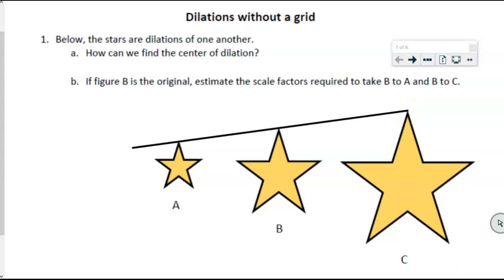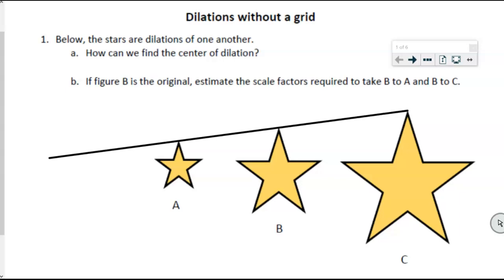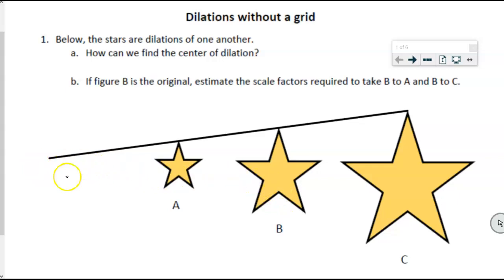I'm going to use a straight edge or ruler and connect each one of those corresponding points. I'm imagining where the center is because I can see that if we continue to shrink this, it's all going to come back into this area. When I line up those points, I'm going to extend that line into the area where, if it gets smaller and smaller, it's going to converge.